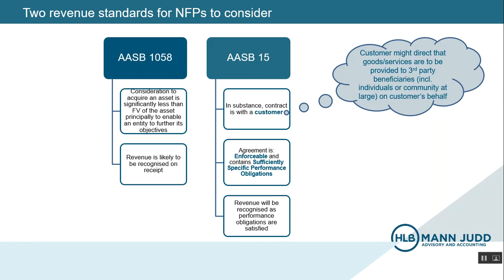AASB 15, revenue from contracts with customers, is a standard that applies to both for-profit and not-for-profit entities. The standard is written largely with for-profit entities in mind, which can make it difficult for NFPs to know how to apply it to their circumstances. The standard does however provide guidance for not-for-profits in Appendix F. AASB 15 is a relatively long standard and it can be easy to put it down before you get to Appendix F.